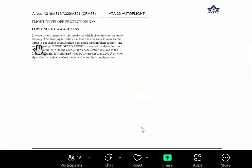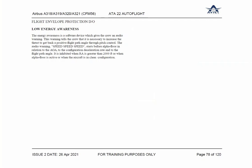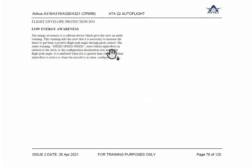The low energy warning, visible in the diagram, is software that gives audio warnings when the energy is down on the aircraft. To get a positive flight path through pitch control, you will get the message 'speed speed speed' and you have to attain a positive attitude. This warning is inhibited below 2000 feet radio altitude — it only comes when radio altitude is less than 2000 feet.